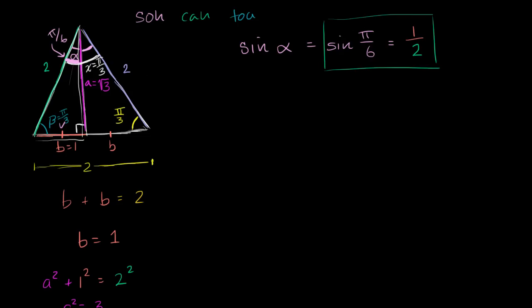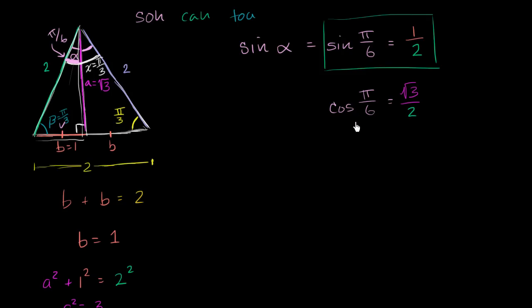The cosine of alpha, or cosine of pi over six: cosine is adjacent over hypotenuse. The adjacent side is square root of three, and the hypotenuse is two, so cosine of pi over six equals square root of three over two.